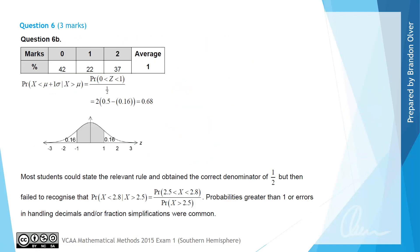From the examiner's report, 37% of students got full marks for part B. Most students could state the relevant conditional probability rule and obtain the correct denominator of one half, but failed to correctly identify the numerator probability. Probabilities greater than 1, which should be known to be impossible, were often seen. Errors also occurred in handling decimals and fractions during simplification.